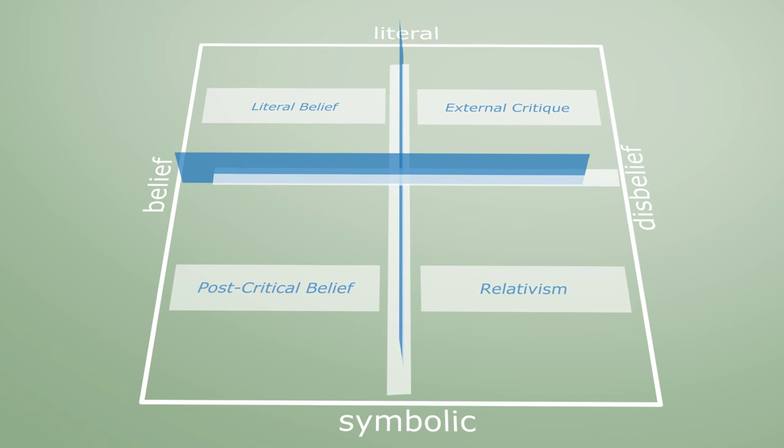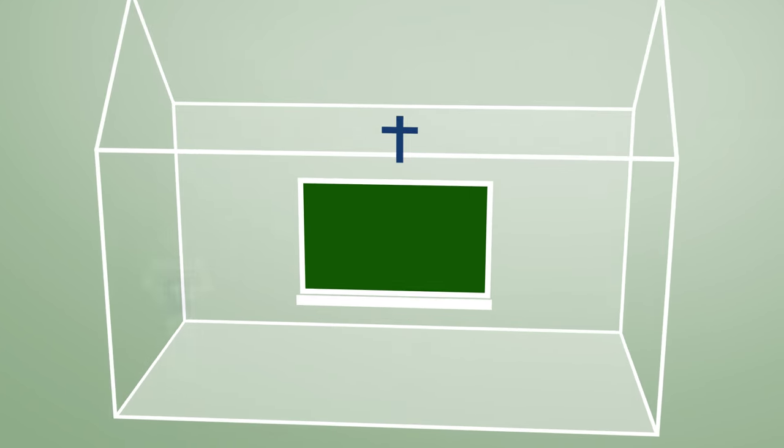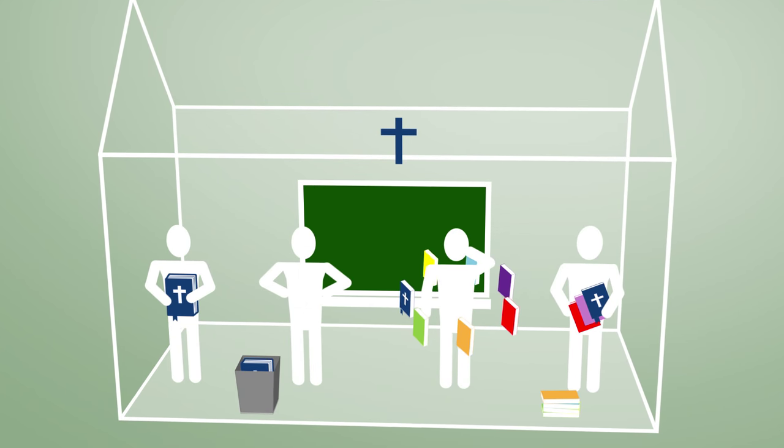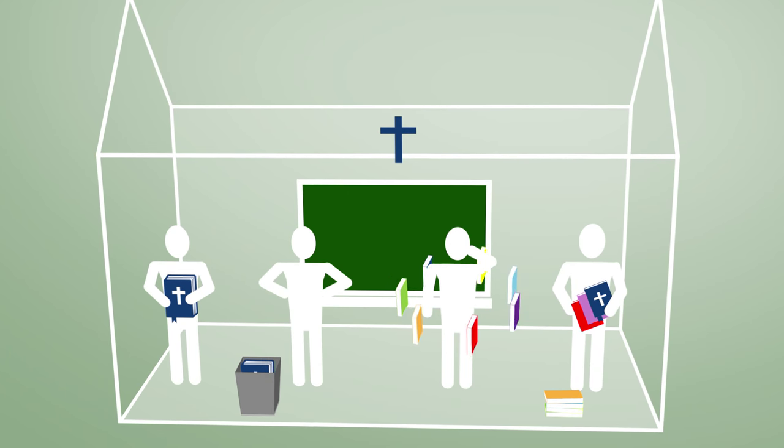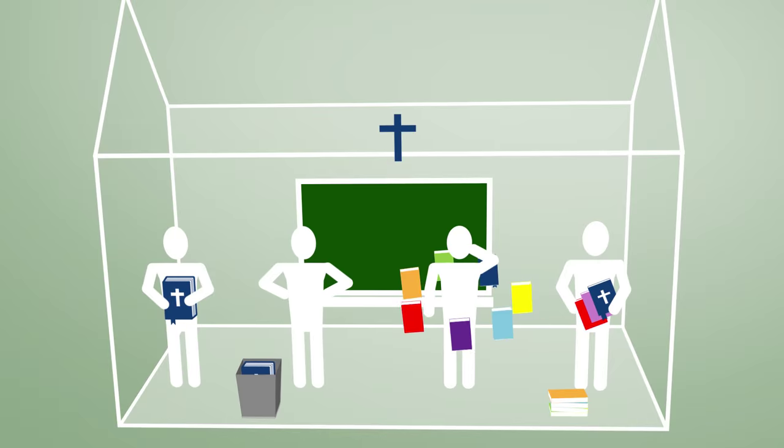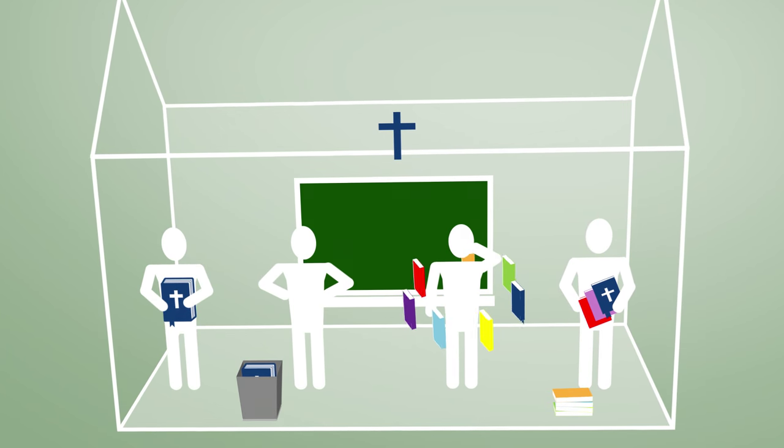With the PCB scale, you can discover your own belief style. To analyze the Catholic identity of a school, it is important to gain insight into the cognitive belief styles of all school members. This describes and explains the current religious identity of the school, and it sheds light on the future direction in which the school can evolve.